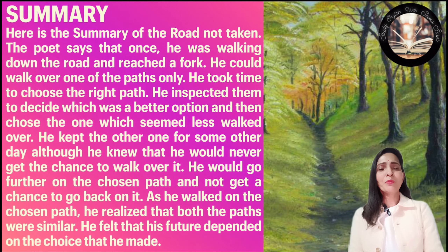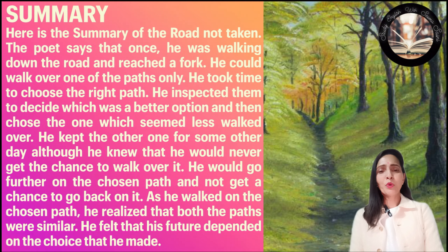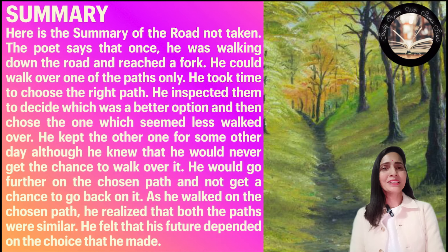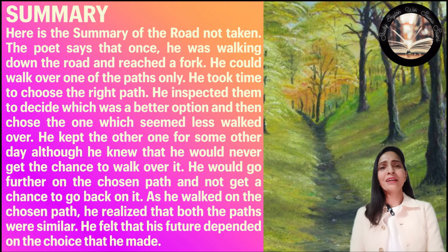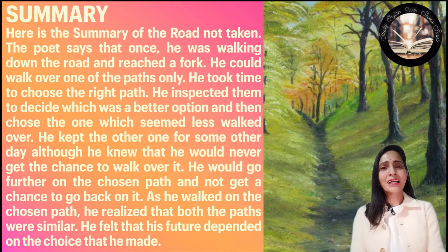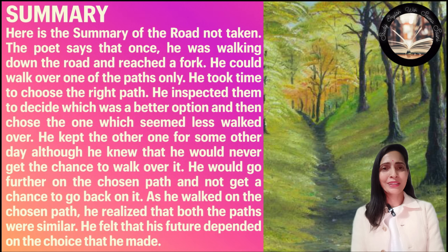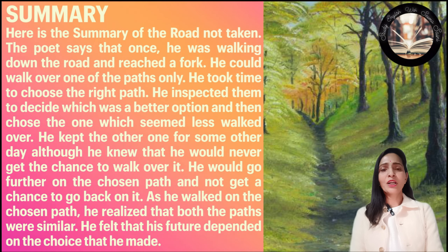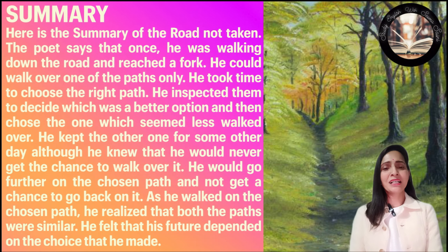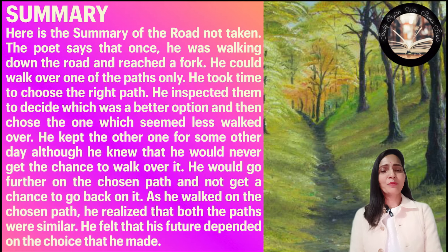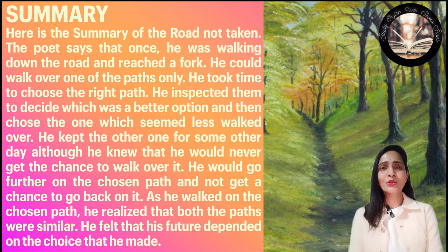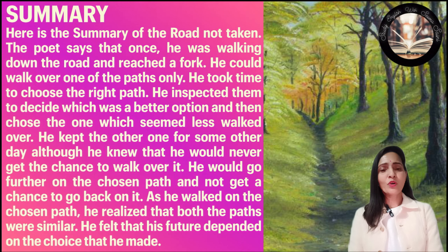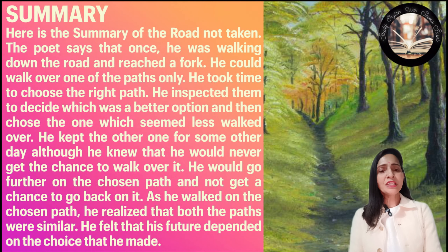Here is the summary of the poem 'The Road Not Taken'. The poet says that once he was walking down the road and reached a fork. He could walk over one of the paths only — he could go only one path. He took time to choose the right path. He saw both roads first and inspected them to decide which was a better option, then chose the one which seemed less walked over.